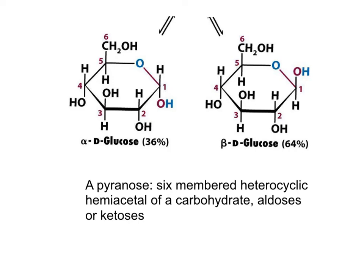The product of reaction of oxygen on carbon number 5 with the carbonyl, which is carbon number 1 of glucose, will produce a hemiacetal, defined as the carbon that has an OH and also has an OR. This is a six-membered ring called a pyranose.